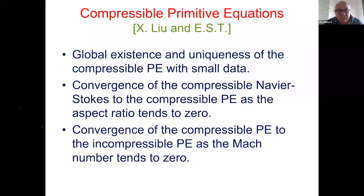Finally, for compressible primitive equations — motivated by the atmosphere where compressibility matters more than in the ocean — we have work with Xin showing global existence and uniqueness for small initial data. We show convergence of compressible Navier-Stokes to compressible primitive equations as the aspect ratio tends to zero, and convergence of compressible to incompressible primitive equations as the Mach number goes to zero. Since incompressible primitive equations have global existence, this gives global existence of weak solutions for compressible primitive equations for well-prepared initial data.